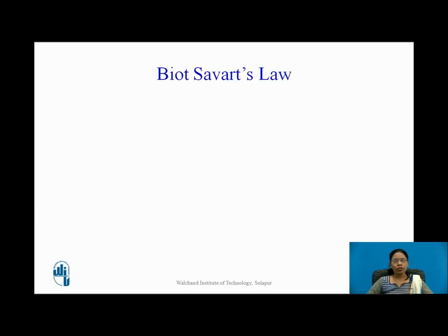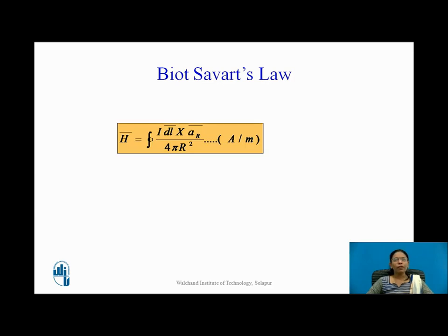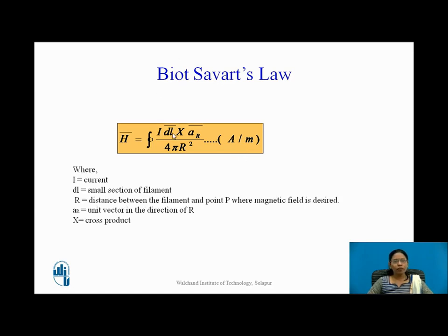Biot-Savart's law can be given as H bar is equal to the closed line integral of I DL bar cross AR bar upon 4 pi R square. The unit of magnetic field intensity is amperes per meter. Where I stands for current, DL is a small section of the filament, and AR bar is the unit vector in the direction of R bar. R is the distance between the filament and the point P where we want the magnetic field. Note that this symbol is a cross product, not a simple multiplication.